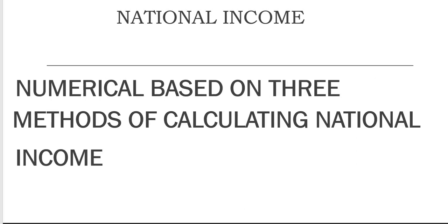The fifth most expected question is the numerical. Although numericals did not appear in the last compartment paper or this year's sample paper, you never know — a numerical may come. The level of numericals has become easy. It could be calculating national income using the income or expenditure method, or they may leave one component missing — like NDP-FC or GDP-MP — and ask you to find the answer.